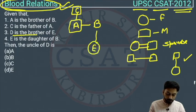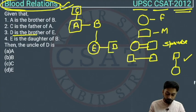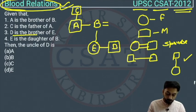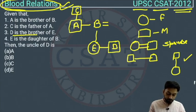The next statement: E is the daughter of B, so E is female and a child of B. D is the brother of E, so D is male. Therefore, both D and E are children of B. We don't know the spouse of B, and we also don't know the gender of B — but we know A is the brother of B.